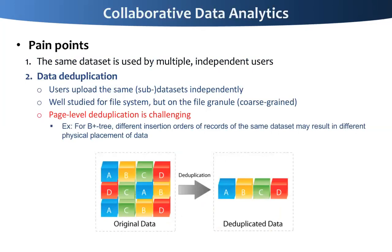Second is about data redundancy. Users may upload the same dataset or subset of the dataset independently. Even if storage is not that expensive nowadays, the solution is not going to scale for massive collaborative data analytics. Data deduplication is quite necessary in this case and is already well-studied for file systems, but at the file granularity. For example, you can calculate the MD5 or SHA-128 on the file as a signature and use this signature to do deduplication. However, the solution is not applicable to database cases. If we have a table materialized as a file and we update one single record, the file will have a different signature. If we want to keep track of all versions of the updates, the solution is not going to scale.